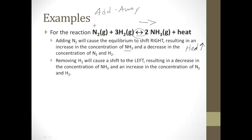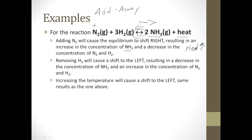Removing hydrogen is going to shift towards — so if we remove hydrogen, there'll be a shift to the left, causing a decrease in NH3, a decrease in heat, but now an increase in nitrogen. Increasing the temperature — add, away — we'll shift away from the heat side, causing an increase in nitrogen, an increase in hydrogen, and a decrease in ammonia.